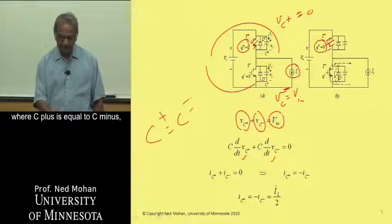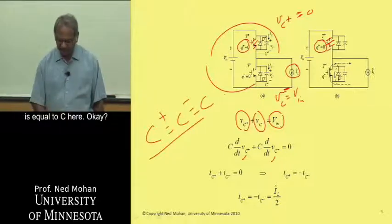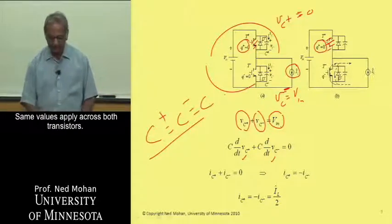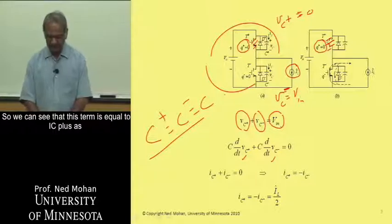And multiply both sides by the capacitance C, where C plus is equal to C minus is equal to C here. Same value applied across both transistors.